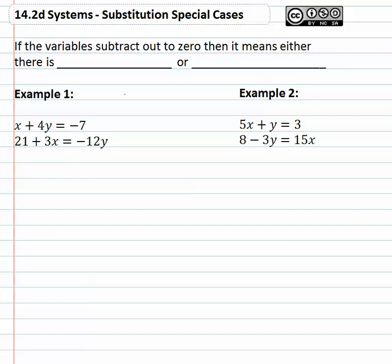However, when we're using algebra to represent this, sometimes the variables will subtract out to zero. If this happens, it means there is either no solution, that's where we had parallel lines. If you remember graphing parallel lines.